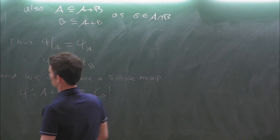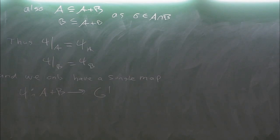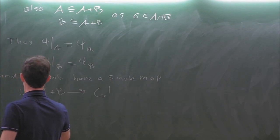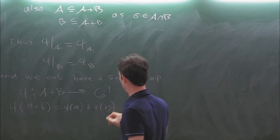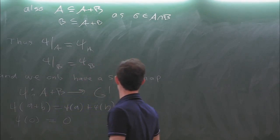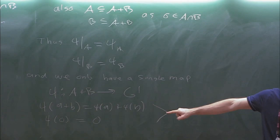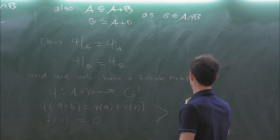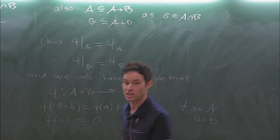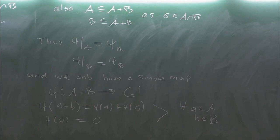After normalization, we don't have to worry about different coordinate maps. We can just assume a single map that is basically a homomorphism: psi(a+b) equals psi(a) plus psi(b), and psi(0) maps to zero. The only difference from a normal group homomorphism is we don't need this to hold for every pair of elements inside the group - only for every pair inside A cross B.